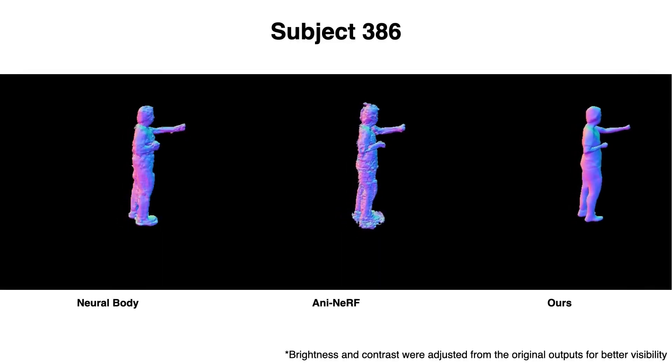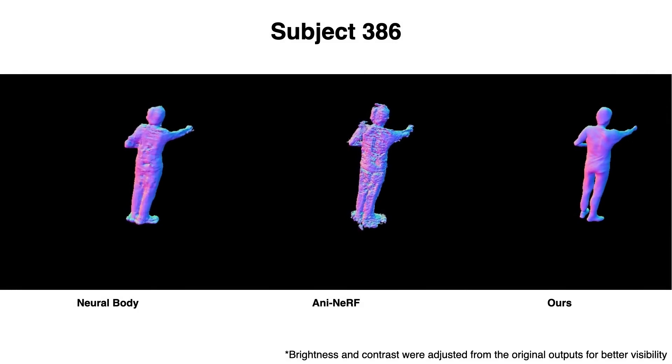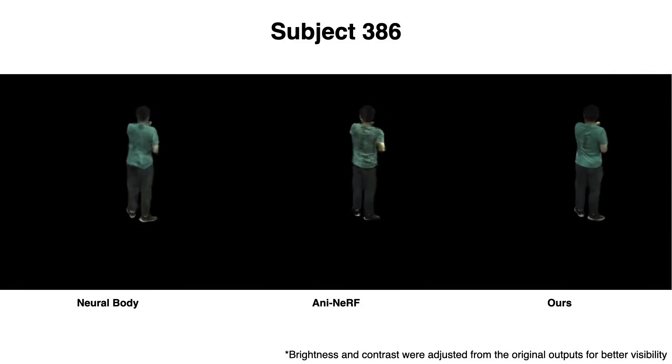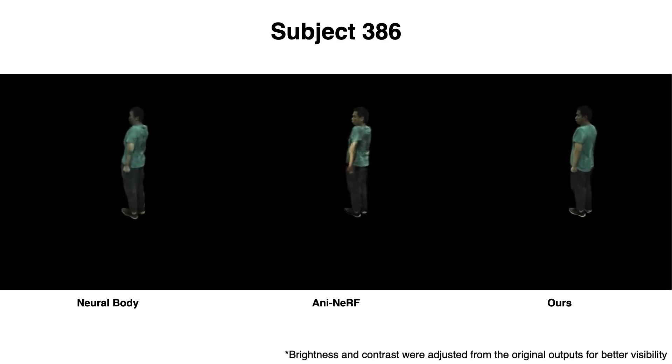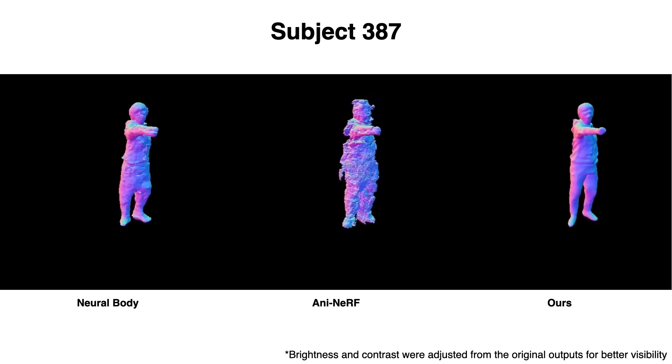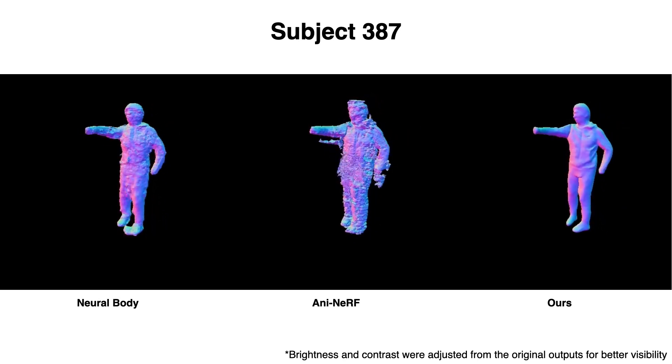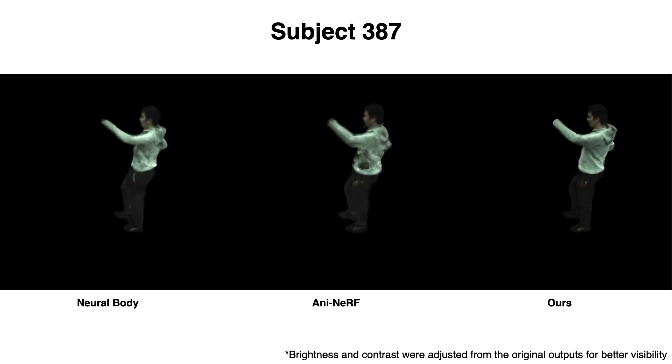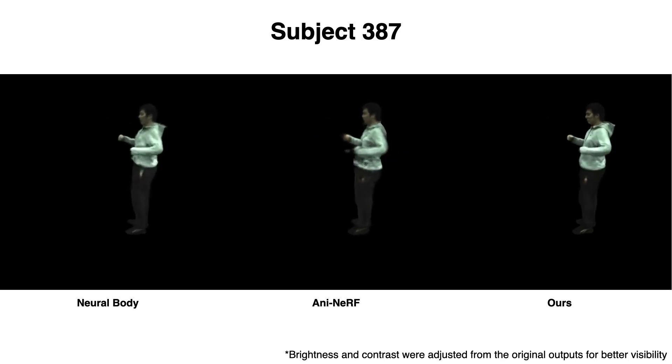We first show within-distribution pose experiments, in which the test poses are very similar to training poses. All models are trained with four views. Both baselines, neural body and animatable nerf, are based on nerf representation and thus suffer from noisy, inconsistent geometry and appearance. In contrast, our approach uses SDF-based volume rendering resulting in more consistent appearance and geometry across frames.